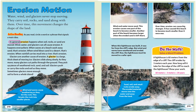Wind and waves cause weathering as they hit the rock, breaking it into smaller pieces. Wind and water move sand — this erosion causes one part of the beach to become smaller, while another part becomes larger when the eroded sand is left there. Over time, erosion can cause big changes. It has caused this beach to become much smaller than it once was. When this lighthouse was built, it was far from the cliff's edge, but wind and waves have weathered and eroded the cliff. Now the lighthouse must be moved to a safer spot. Sand, soil, and small rocks erode away, and the eroded material moves into the water and away from the land.